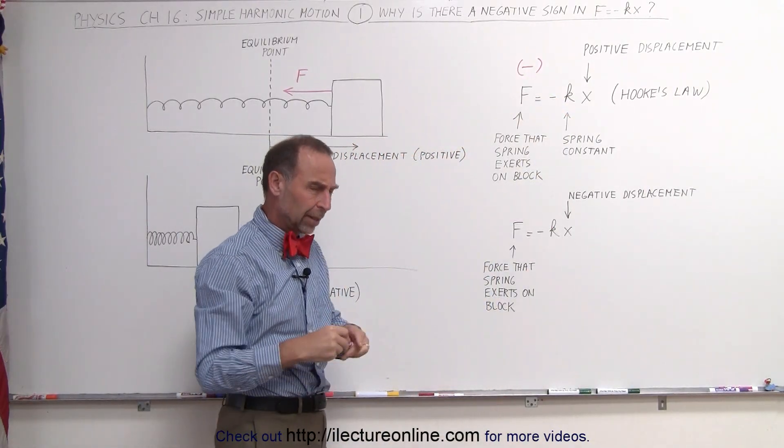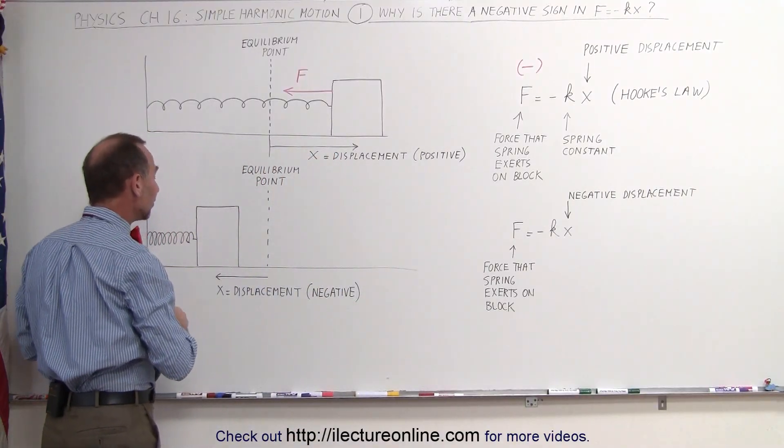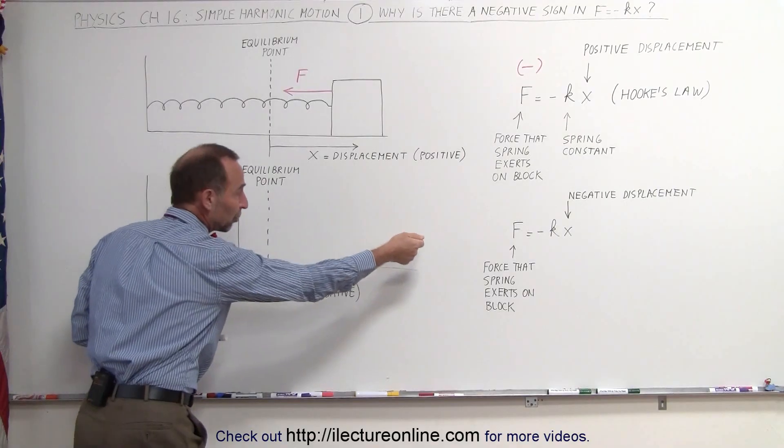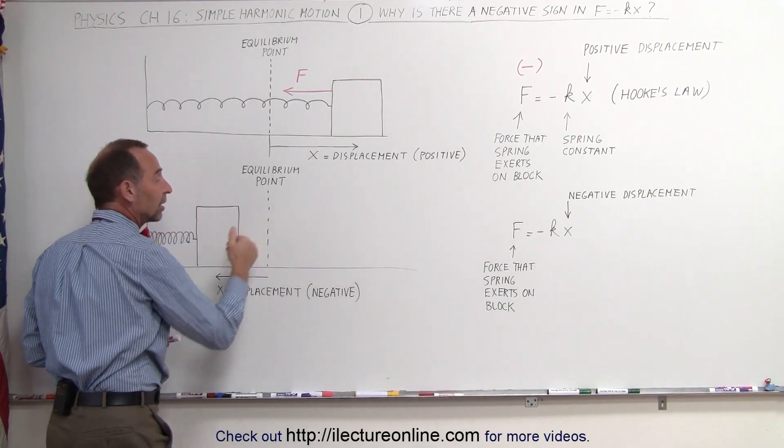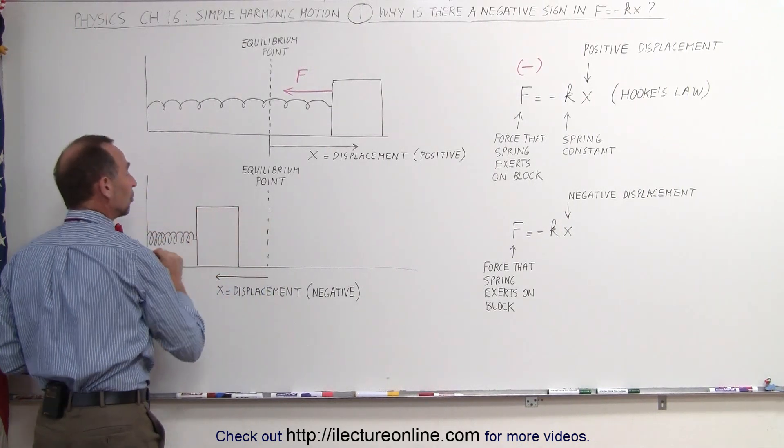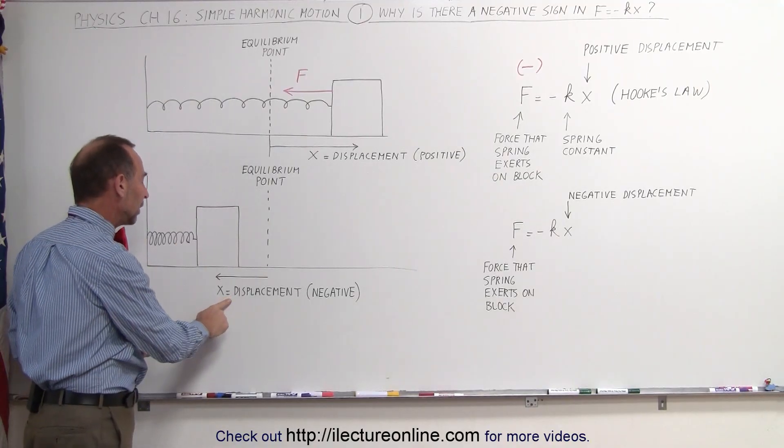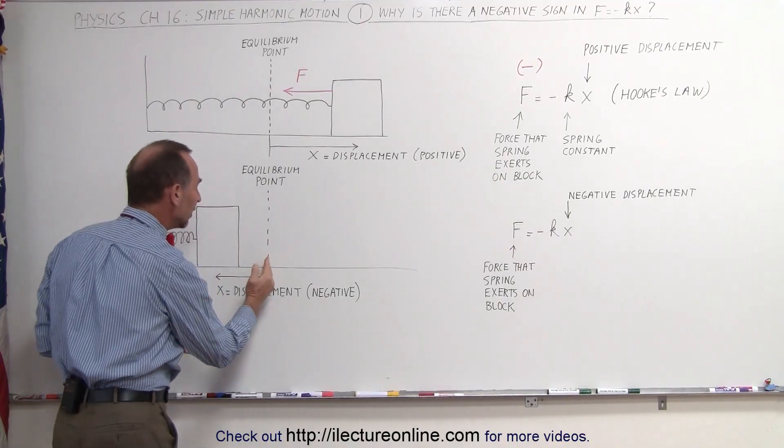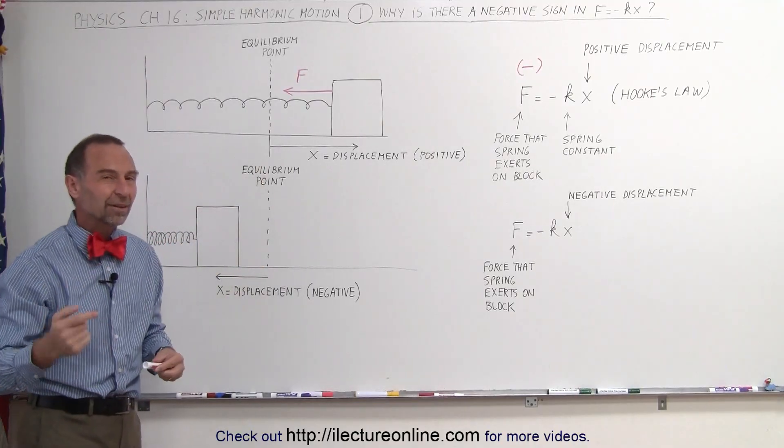But what if the block is on the other side of the equilibrium point? What happens now? For example, the spring has now pulled it, the block accelerated towards the equilibrium point, shot over the equilibrium point, and now the block is compressing the spring because the spring is now slowing down the block. Now the displacement for the block is a negative quantity. It is to the left of the equilibrium point, therefore the displacement is negative.